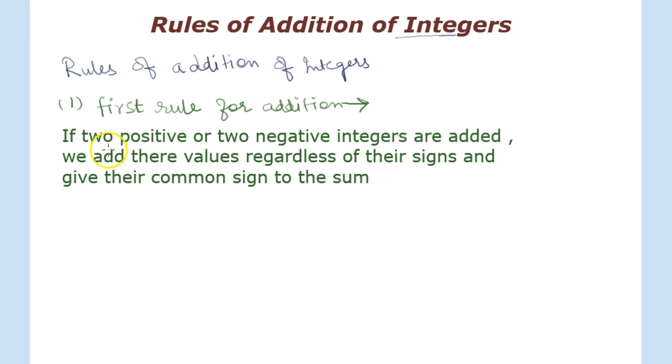Let us consider the first rule of addition. According to this rule, if two positive or two negative integers are added, we add their values regardless of their signs and give their common sign to the sum.